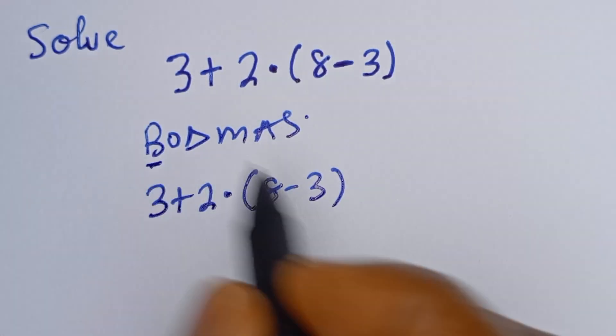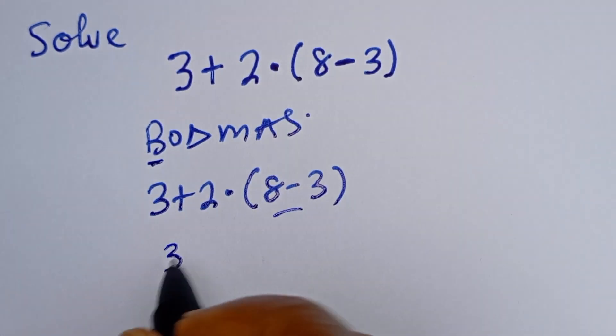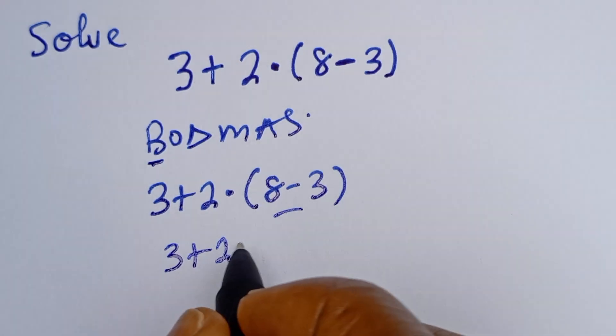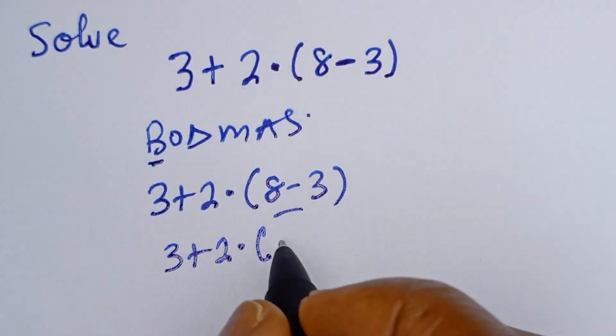Now if you look at this, we have to operate the bracket first. We have 3 plus 2 multiplied by 8 minus 3—that is 5.